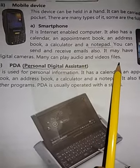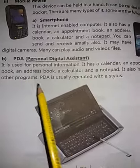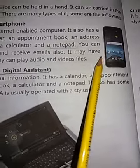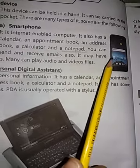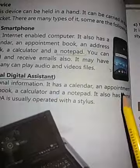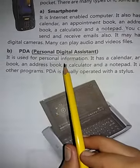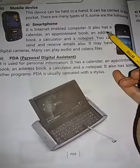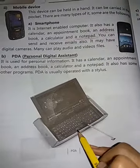Next mobile devices کی type ہے PDA — Personal Digital Assistant۔ یہ smart phone touch screen phone ہے جو internet سے چلتا ہے۔ PDA is used for personal information — یہ personal information کے لیے use ہوتا ہے۔ اس میں calendar، appointment book، address book، اور calculator ہوتا ہے۔ یہ personal computer ہے — ایک انسان use کر رہا ہے، دوسرا نہیں کر سکتا۔